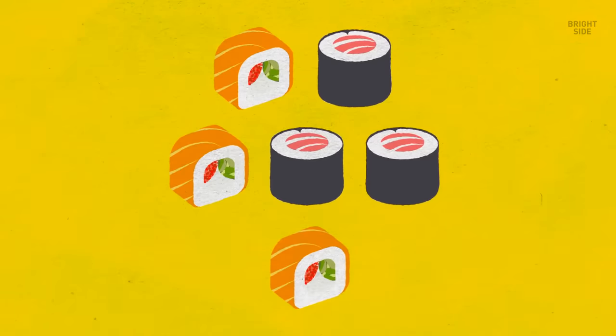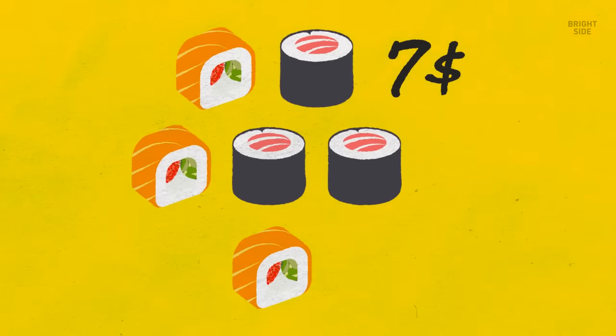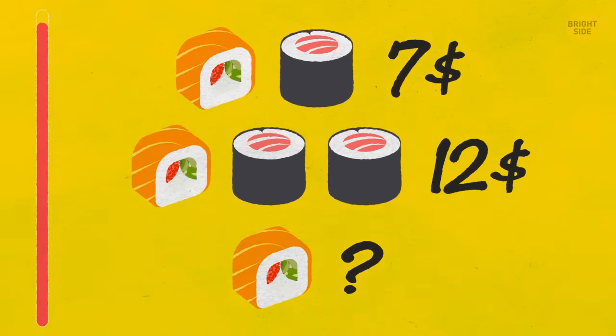In this image, you can see some yummy rolls. These two rolls, orange and black, cost $7. There are three rolls on the middle shelf. Two black and one orange. And together, they cost $12. There is one orange roll on the third shelf. How much does it cost? Its price is $2.